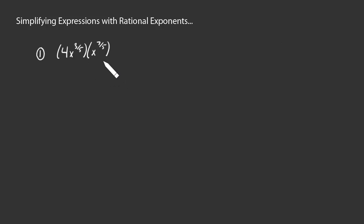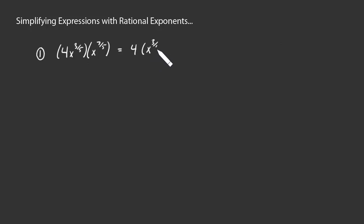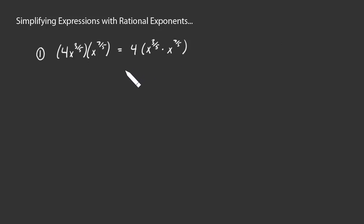There's nothing preventing us from finding the product of these two powers of x first and then multiplying by 4 — that's just re-associating things. We have a product of two powers with the same base, so we know we can simply add the exponents to find that product. We can rewrite this as 4 times x to the 3 fifths plus 7 fifths power.